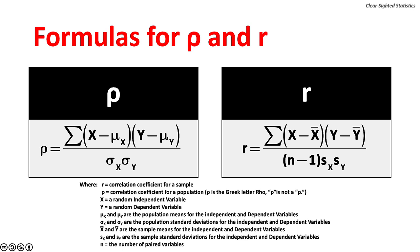For the population, rho, the coefficient of correlation, equals the sum of x minus the population mean for the independent variables, times y minus the population mean for the dependent variable, over the population standard deviation for the independent variables times the population standard deviation for the dependent variables. For a sample, r equals the sum of x minus the sample mean for the independent variables, times y minus the sample mean for the dependent variables, over the number of matched pairs minus one, times the sample standard deviation for the independent variables times the sample standard deviation for the dependent variables.